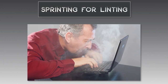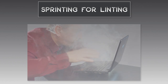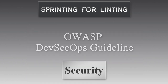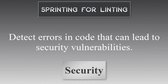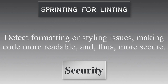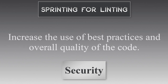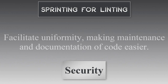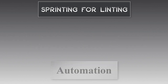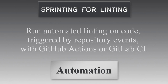Here are even more reasons to have you sprinting for linting. According to OWASP, linting increases security by detecting errors in code that can lead to security vulnerabilities, detecting formatting or styling issues, making code more readable and thus more secure, increasing the use of best practices and overall quality of the code, and facilitating uniformity which makes maintenance and documentation of code easier. Linting also enables automation — we can run automated linting on code triggered by repo events with GitHub Actions or GitLab CI.